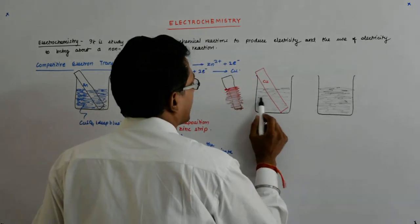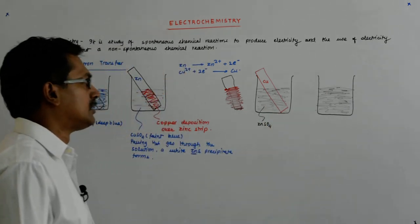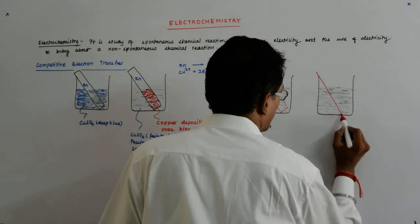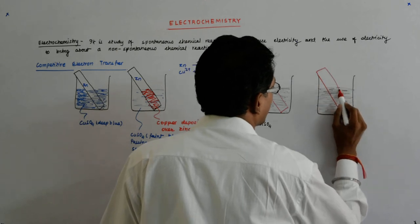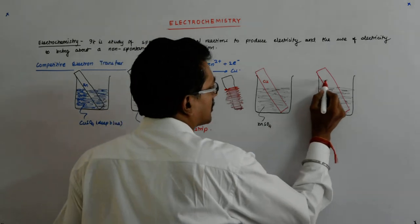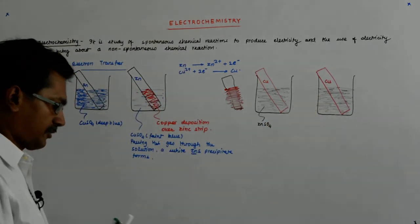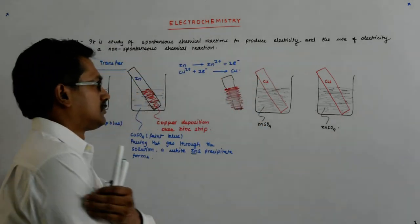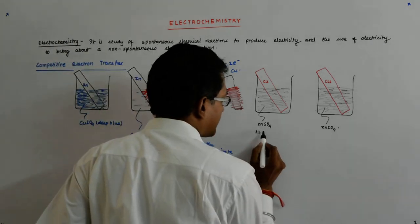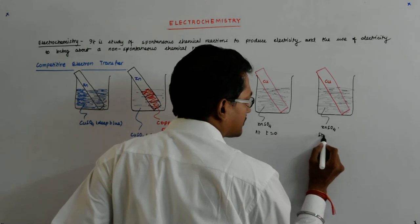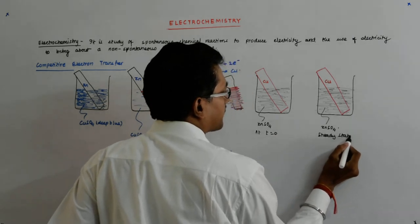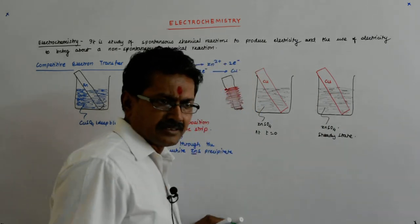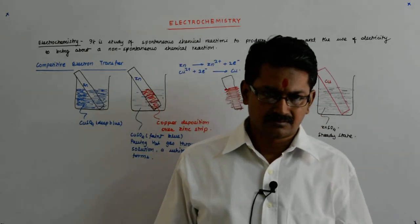There is no change visible in the solution and no change visible on the copper strip. This ZnSO₄ solution at t=0 is at steady state at t=infinity as well. You wait for a sufficiently long time and find no change occurring.